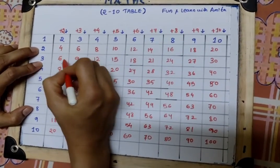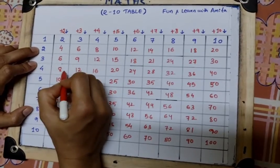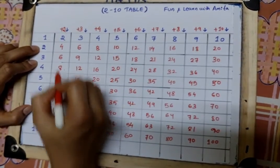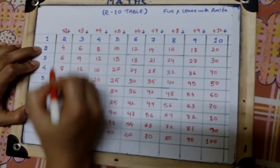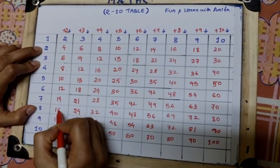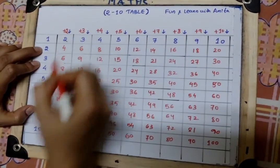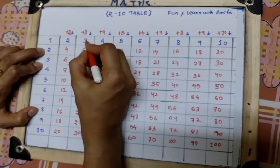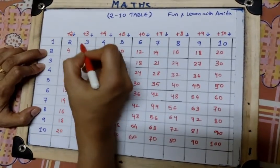2 fours are 8, 2 fives are 10, 2 sixes are 12, 2 sevens are 14, 2 eights are 16, 2 nines are 18, and 2 tens are 20. See how easy it is.